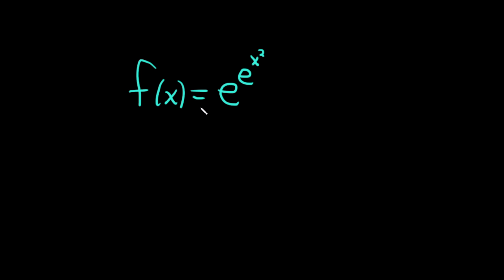Okay, we're going to find the derivative of this function f of x equals e to the e to the x squared. So let's do it.